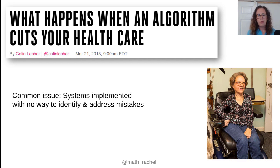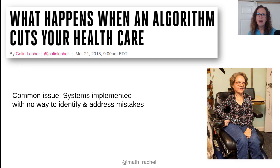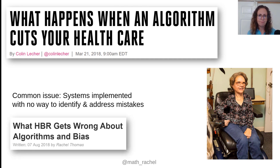It's really important to implement systems with a way to identify and address mistakes quickly and in a way that minimizes damage. We all know software can have bugs and our code can behave in unexpected ways, and we need to be prepared for that. I wrote more about this idea in a post called 'What HBR Gets Wrong About Algorithms and Bias.'